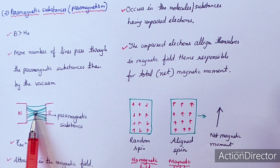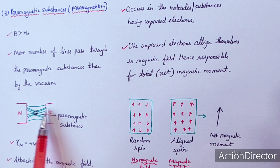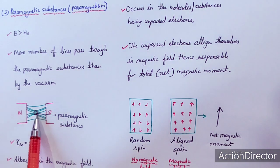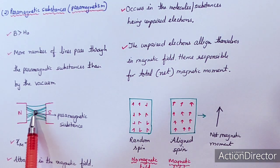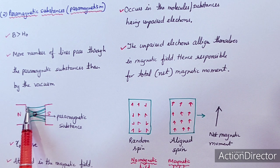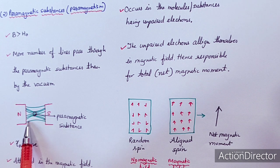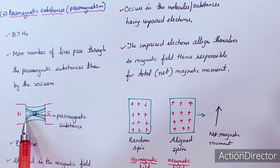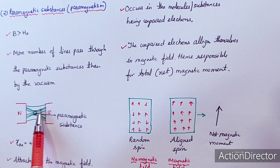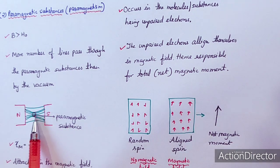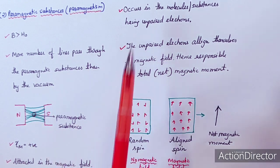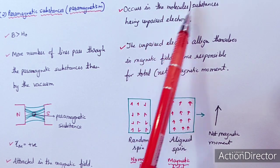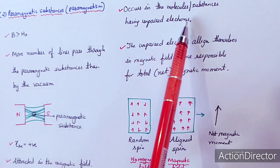If we place a paramagnetic substance between the magnetic poles, more lines pass through it as compared to vacuum. The region without paramagnetic material has fewer lines passing through it. Paramagnetism occurs in molecules or substances having unpaired electrons — systems which have unpaired electrons show paramagnetic behavior.